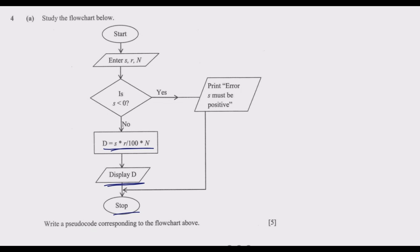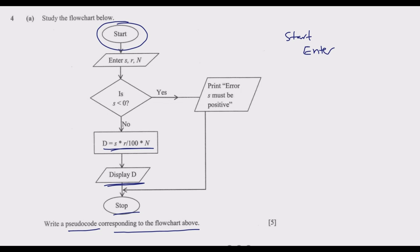The question says: write a pseudocode corresponding to the flowchart above. The first step is START. Then we indent with a tab and write ENTER. What are we entering? We are entering the values s, error, and n — we enter them like that.